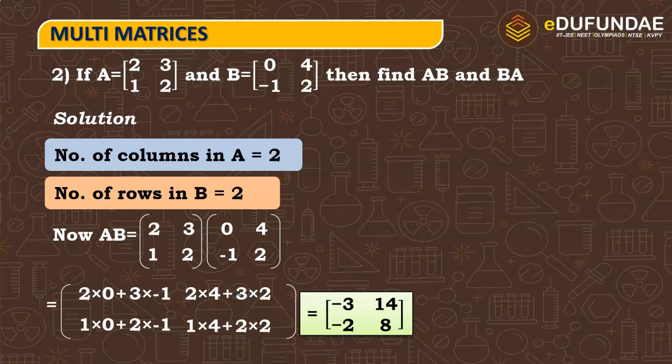If we solve, the first entry is minus 3. Then, the second entry is 2 into 4 plus 3 into 6 is 14. Similarly, minus 2 and 8. So, we have AB matrix.